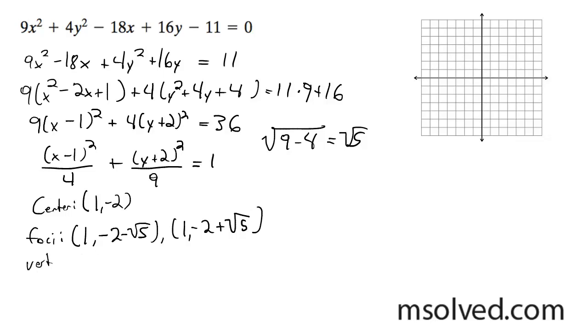And then our vertices are going to be with our longest component. It's going to be (1, -2 - 3), which is (1, -5). And then (1, -2 + 3), which is (1, 1).